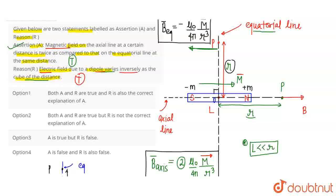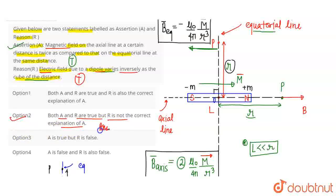Both Assertion and Reason are true, but R is not the correct explanation of A — because the Reason talks about electric field while the Assertion is about magnetic field. So the answer is option number 2. Thank you.